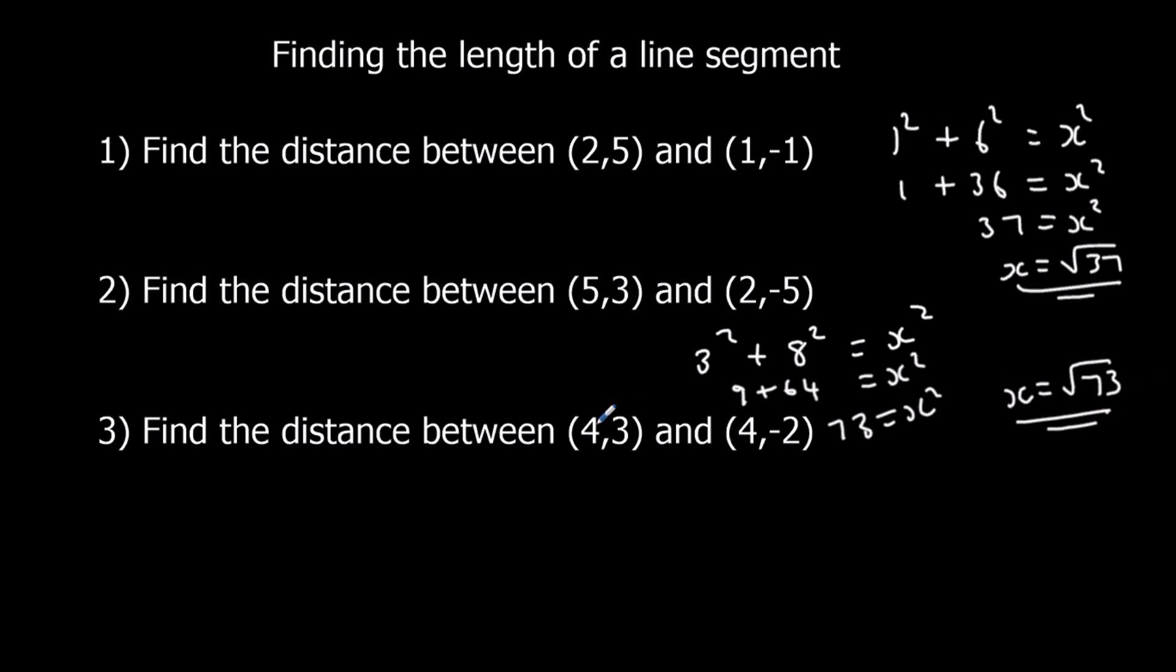Find the distance between... oh. So both of the x's is 4. So if we're following the same process, it's going to give us 0 squared plus 5 squared equals x squared. So 5 squared equals x squared, x is just 5. So imagine we've got (4,3) here, (4,-2) here. The difference is just 5. It's just in a vertical line. So (4,3), (4,-2). It's a vertical line. The difference is just 5.